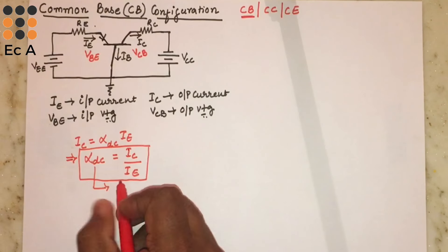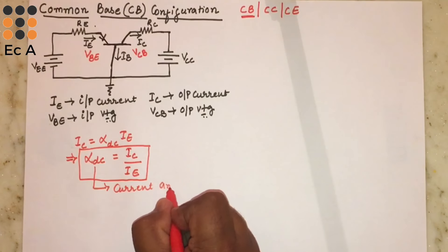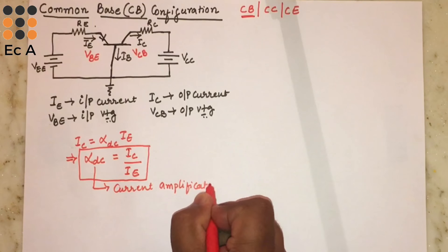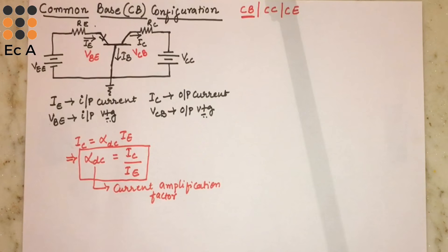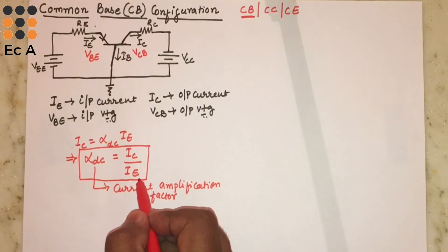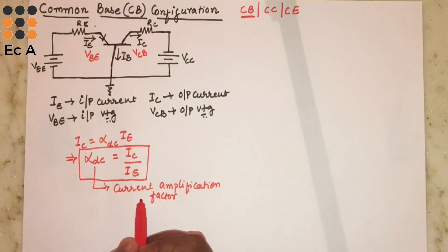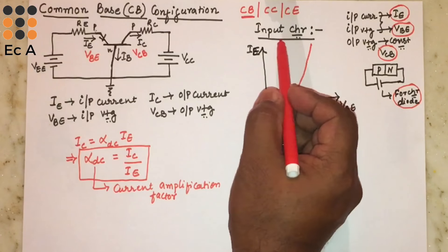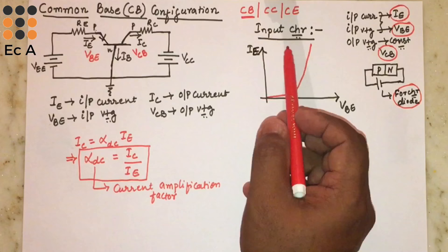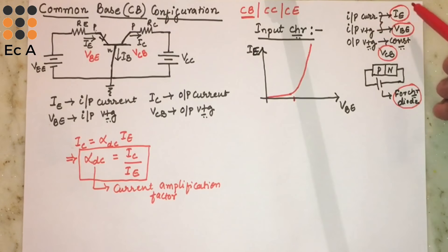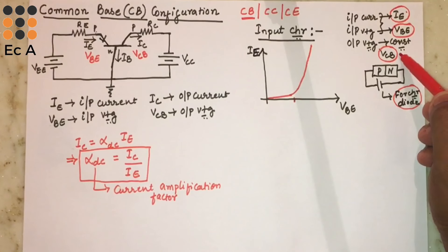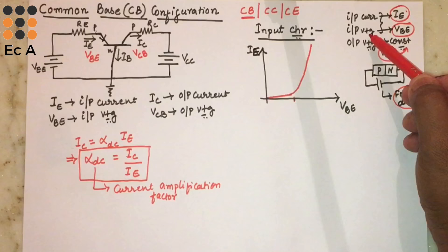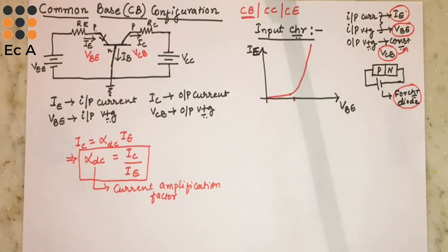We can relate the input current and the output current by the equation: IC = αDC × IE, so αDC = IC / IE. Here αDC is the current amplification factor. The ratio of output current to input current gives us the amount of amplification, so αDC is known as the current amplification factor.